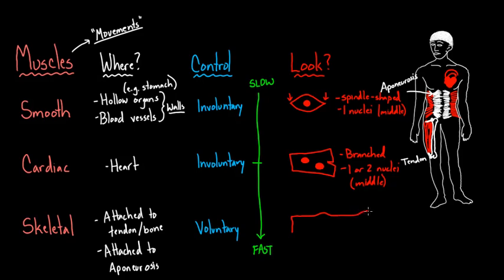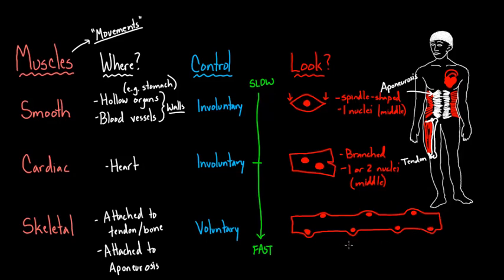Now for skeletal muscle: these cells have little outpouchings on the edge — the periphery — where the nuclei sit. There's not one or two nuclei, but bunches of nuclei. These cells are essentially working as a giant cell. They're straight, not branched, and they have many nuclei located at the periphery. That's why I wanted to point out that the nuclei in smooth and cardiac muscle are in the middle, whereas here they're on the edges.